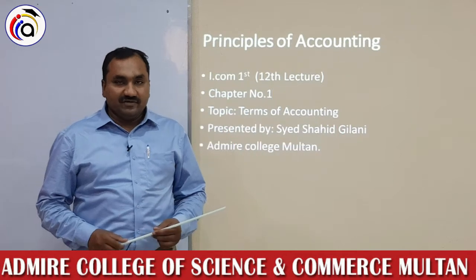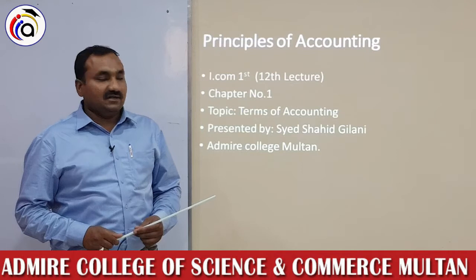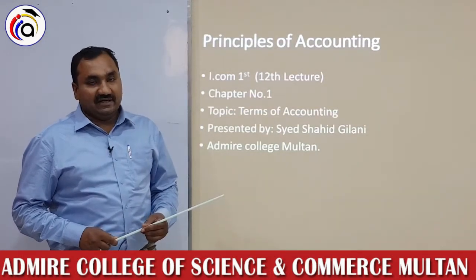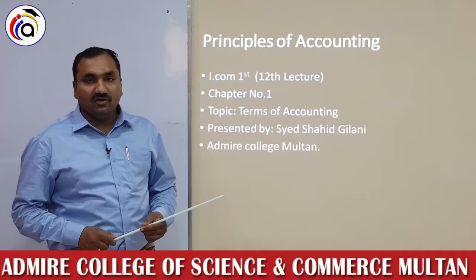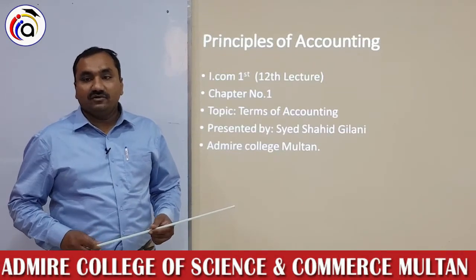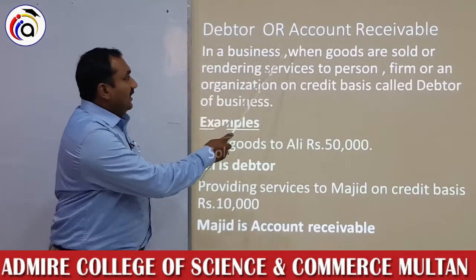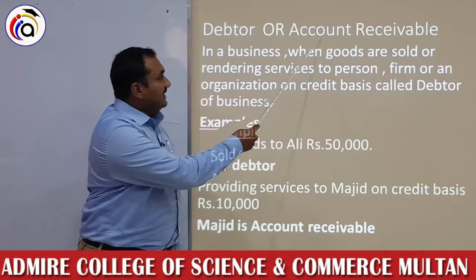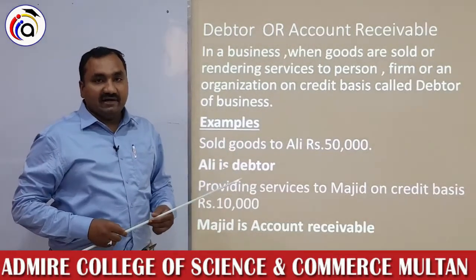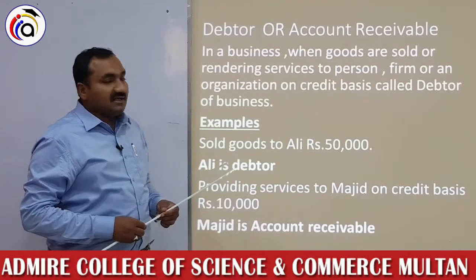Foreign students from Admire College — our topic is terms of accounting. Before the 11th lecture, we have our terms. Next term: debtor, account receivable. Students, account receivable and debtor are current assets. We discuss current assets — current assets include cash and account receivable.